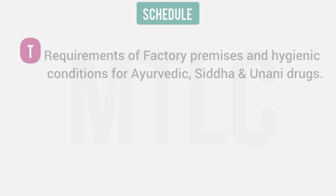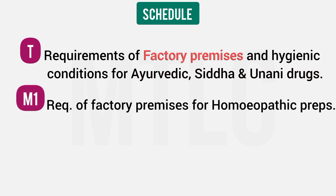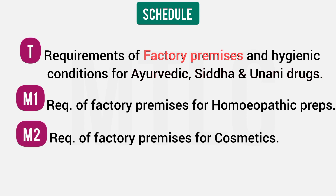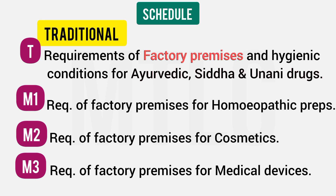Schedule T covers requirements of factory premises for Ayurveda, Siddha, and Unani drugs — T for Traditional System of Medicine. To recap: Schedule M covers General GMP for drug manufacturers; M1 is for Homeopathic preparations; M2 for Cosmetics; M3 for Medical Devices; and T is for Traditional Systems like Ayurveda, Unani, and Siddha.